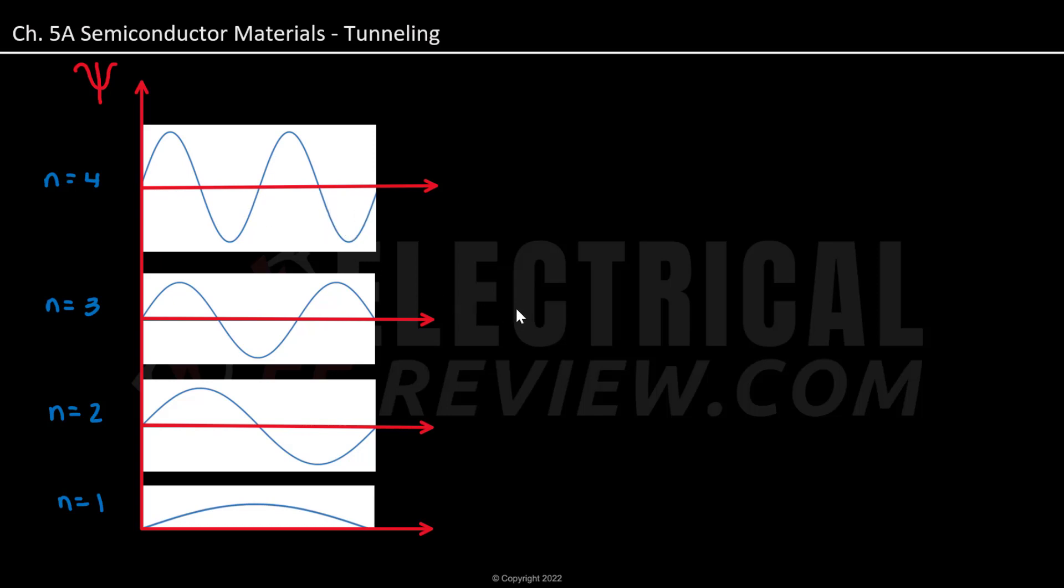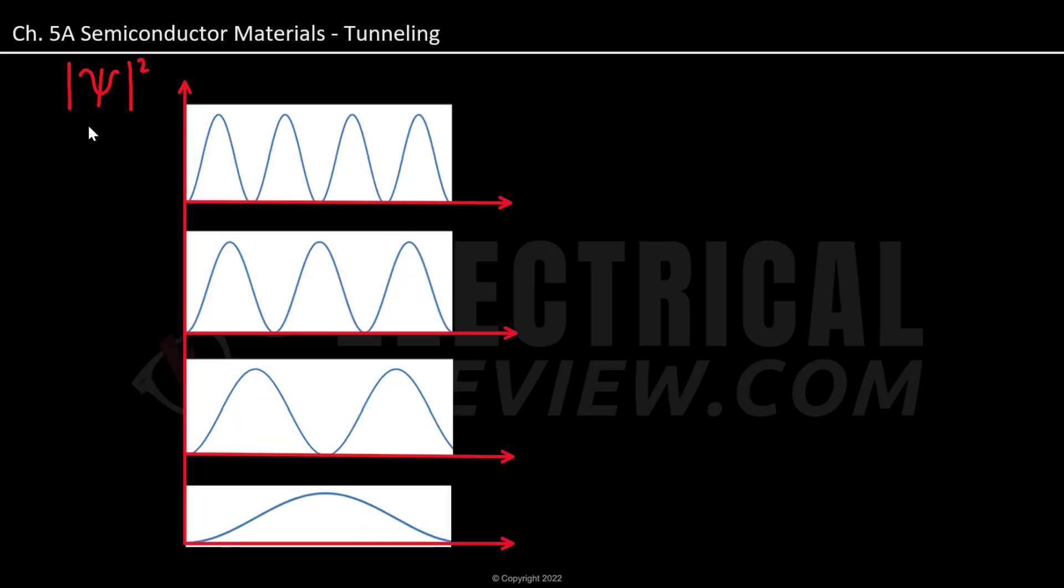And we can take this graph a step further by squaring it. So if we take the absolute value of our wave function and square it, we can look at our energy levels now. We can look at energy level 1, where we have again 1 peak above the x-axis, so it is positive. For energy level 2, we have 2 peaks, and they are now both positive above the x-axis. For energy level 3, we are going to have 3 peaks, all are positive above the x-axis.